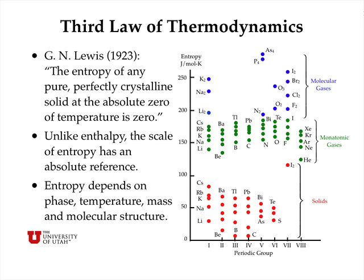The third law of thermodynamics, stated by G.N. Lewis in 1923, says that the entropy of any pure, perfectly crystalline solid at the absolute zero of temperature is equal to zero. Unlike enthalpy, the scale of entropy has an absolute reference, so we don't need to use a relative scale like we do with enthalpy where we set the elements to zero. The entropy of any perfectly crystalline solid is zero at absolute zero.